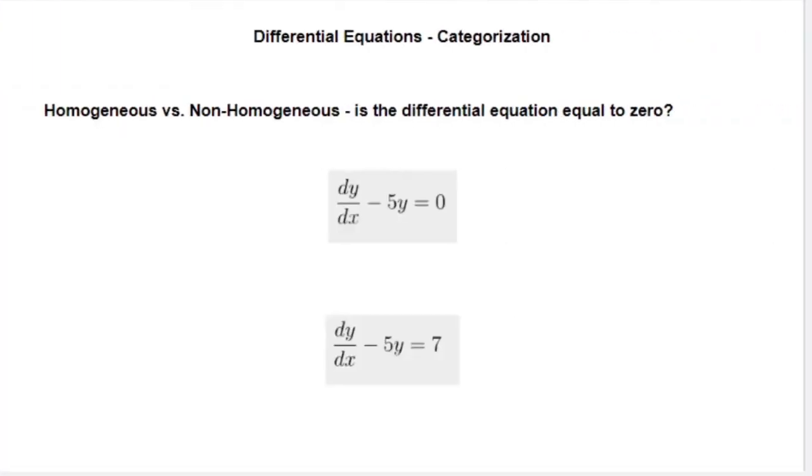Next, we consider homogeneous versus nonhomogeneous. This one's pretty simple. Is the forcing function, which is the function on the other side of the equal sign, equal to zero? In this case, this forcing function is equal to zero, so this one is homogeneous. In this case, it's not equal to zero. This is nonhomogeneous, and we'll see later how we solve those different types of problems.